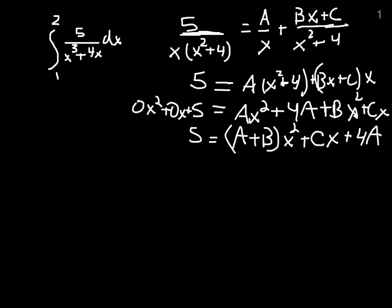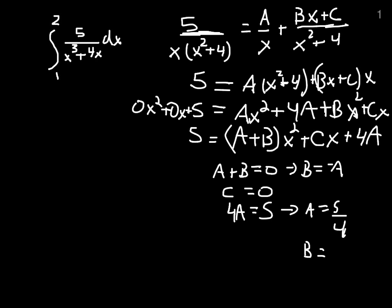And so that means that a plus b must be 0, c must be 0, and 4a must be 5. It tells us that a is 5 fourths, and that b is the opposite of a, so b is negative 5 fourths.